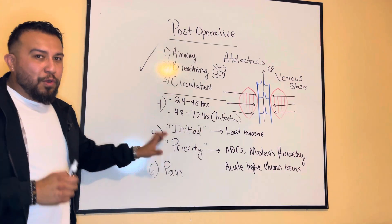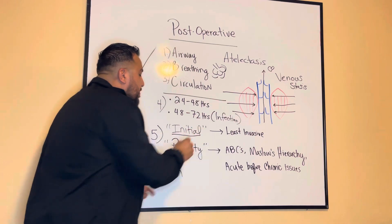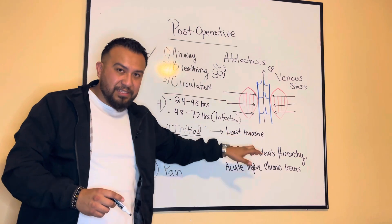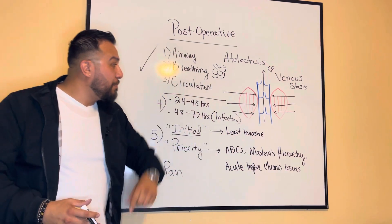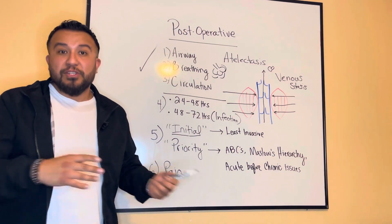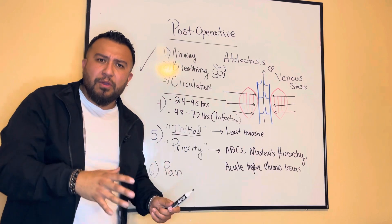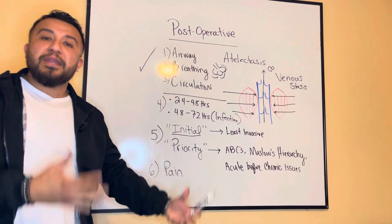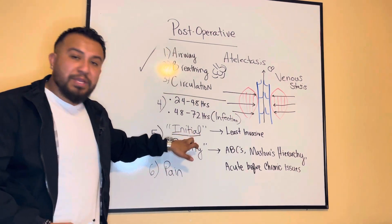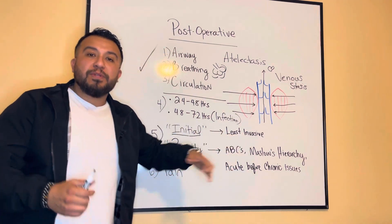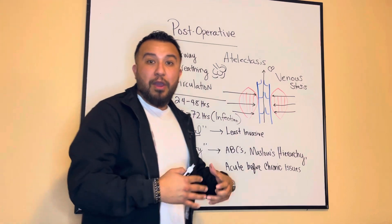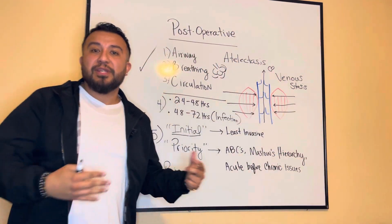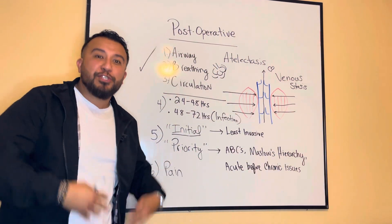When questions refer to the initial intervention, they're telling you this for a reason. Initial interventions are usually least invasive. For example, to prevent DVTs, the fastest way is to ambulate the patient if timeframes allow. If you can't do that, you don't massage the leg — you apply TED hose stockings or pneumatic compression devices. Initial interventions are least invasive and involve independent actions the nurse can take without requiring orders.